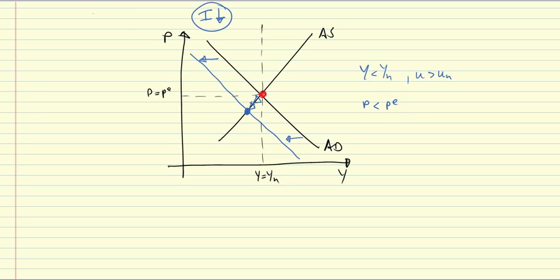There are a few options. First, shift AD back up. So with monetary policy, we could shift AD back up and get back to the initial red point.